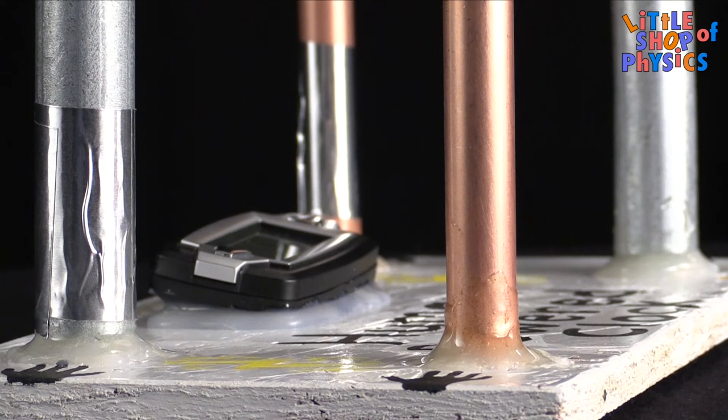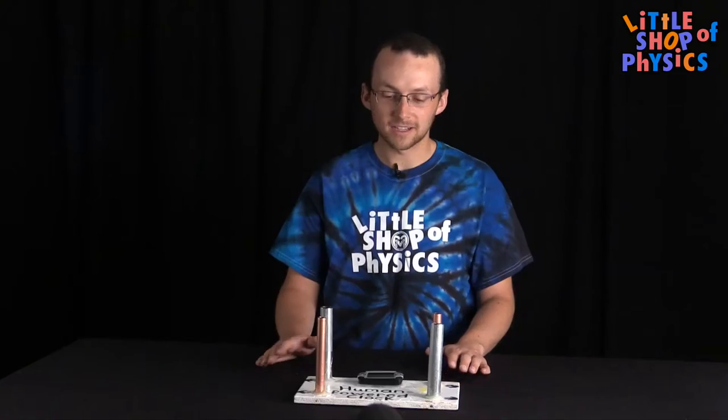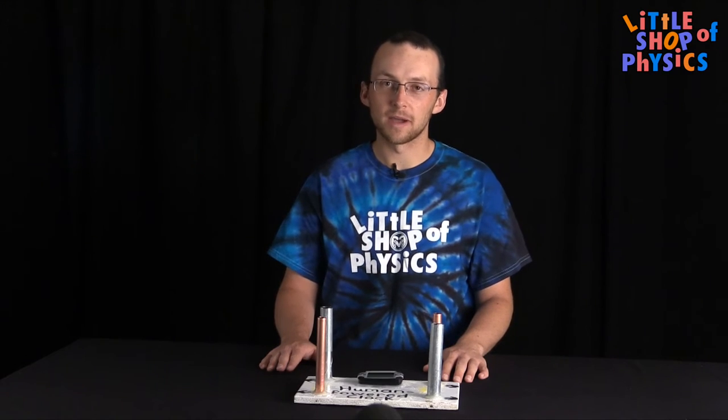The copper and the zinc on the galvanized steel pipe have different affinities for electrons, and so when you connect them, electrons start to flow, and that is what creates the voltage which can power the clock.